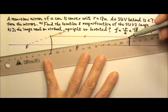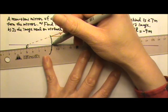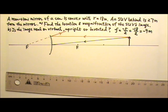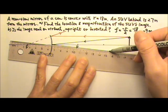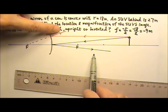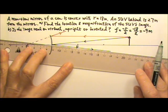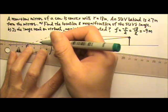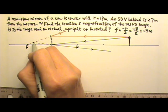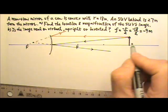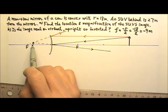The second ray I'm going to draw goes to the center of the mirror, and it gets reflected symmetrically because it has to follow the law of reflection. Now these two rays will never meet, but their extensions meet to show where the image is — that's the tip of the arrow. The arrow shows a smaller, upright image.